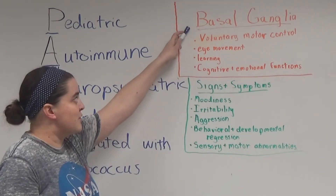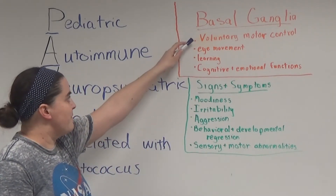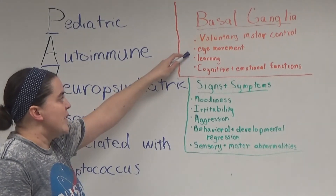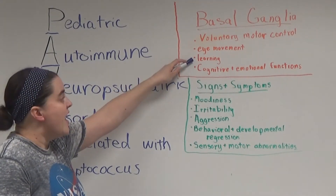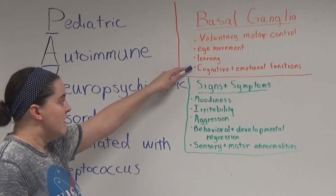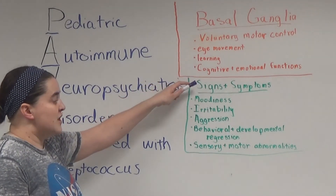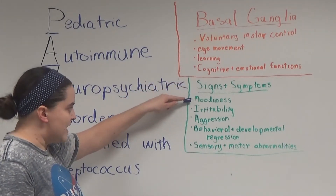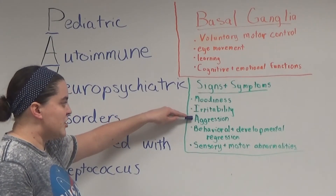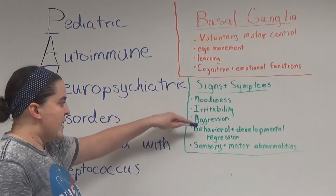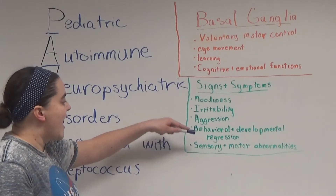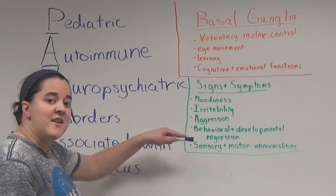The basal ganglia is responsible for voluntary motor control, eye movement, learning, and cognitive and emotional functions, which explain the symptoms of moodiness, irritability, aggression, behavioral and developmental regression, and sensory and motor abnormalities.